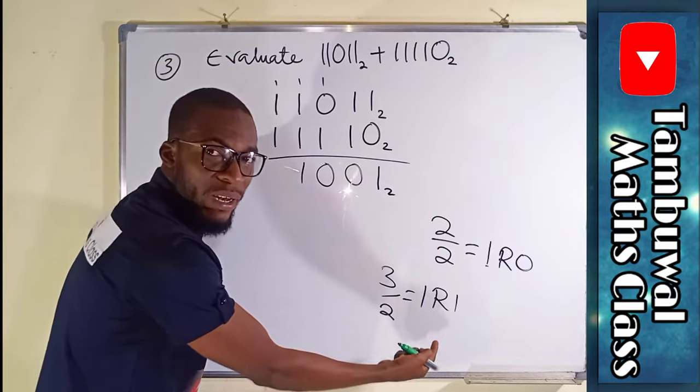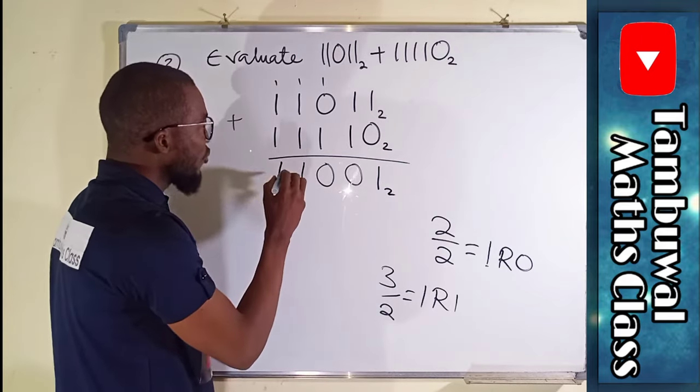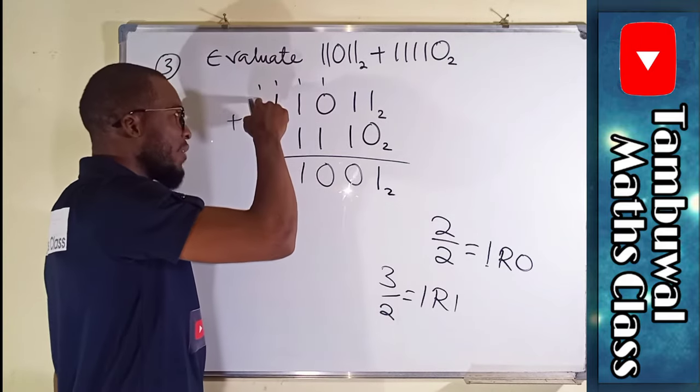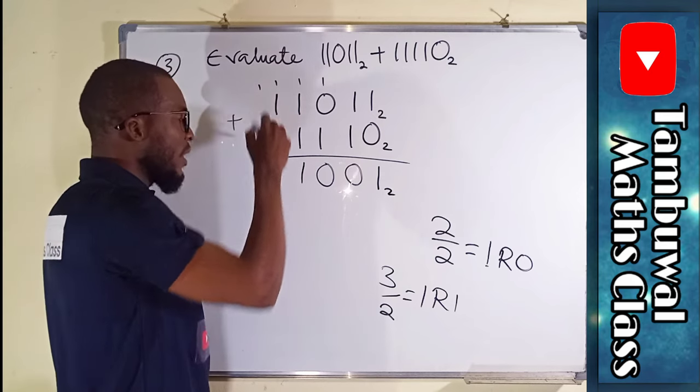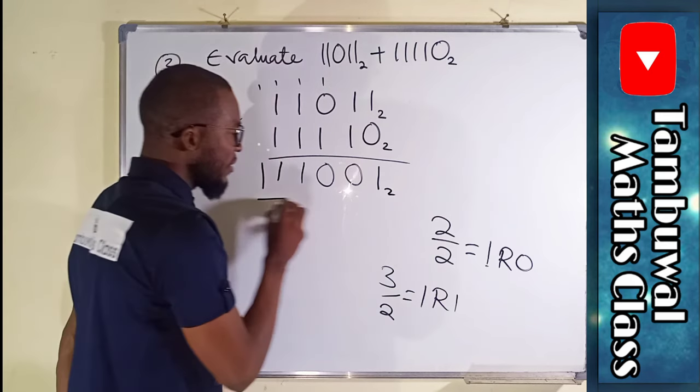Three again is one remainder one. Keep down the one. Take the one to the next. But we do not have any number here to add this one with. Drop it down. And this is our result.